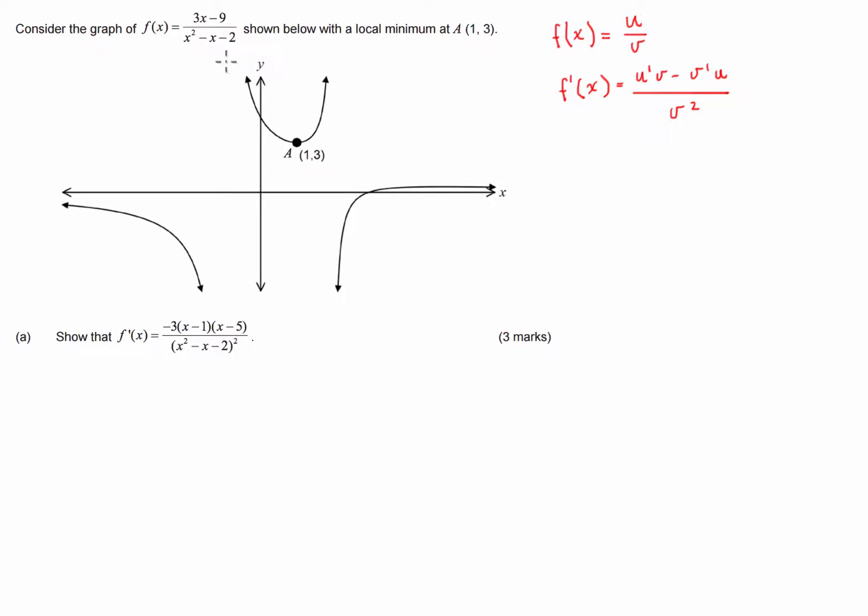Our u is 3x minus 9, so let's start by going, well, the derivative of this is going to be equal to the derivative of the top, which is simply 3, times the bottom. There we go.